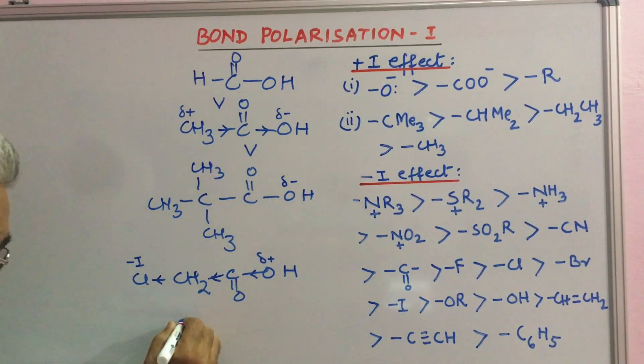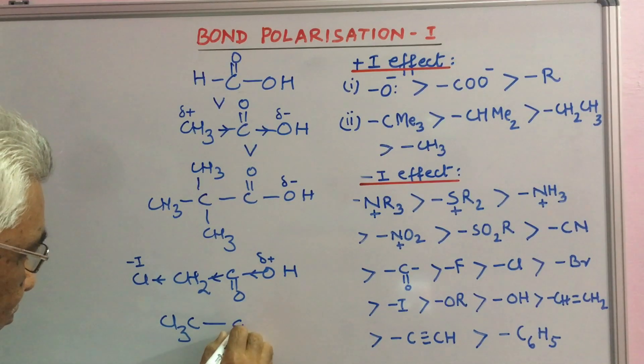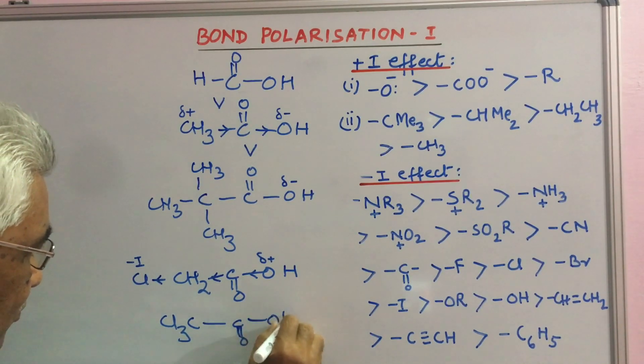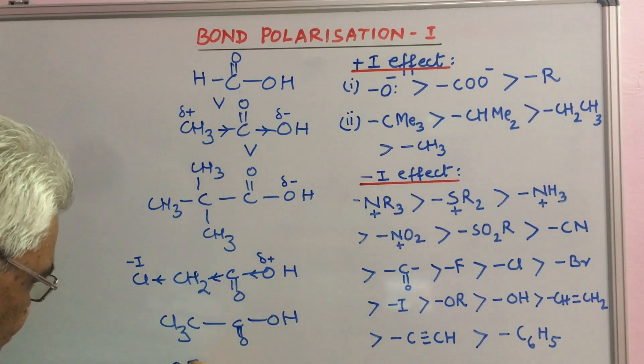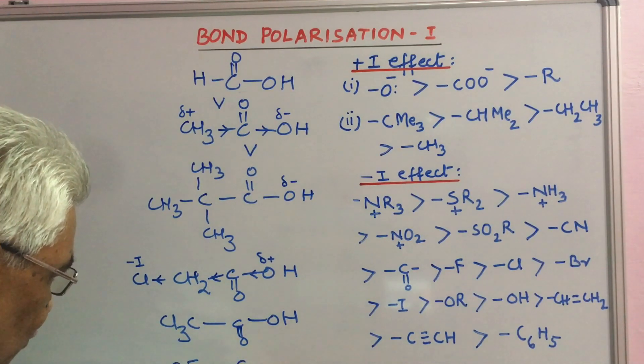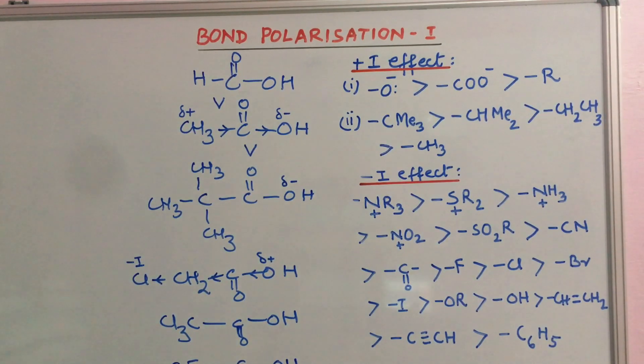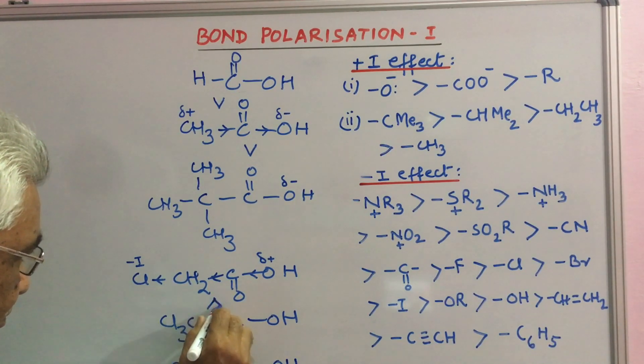If you put 3 Cl here, trichloroacetic acid is much more stronger than chloroacetic acid because 3 Cl atoms together create a very strong delta plus. Therefore, this will create much more stronger delta plus and this acid is the strongest acid of all these.